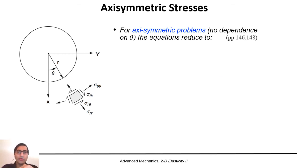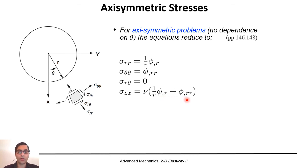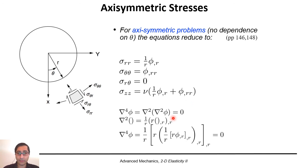As a result, for axisymmetric problems we end up with a simple set of equations: sigma_rr equals 1/r times phi_comma_r; sigma_theta_theta equals phi_comma_rr; sigma_r_theta equals 0; and sigma_zz equals nu times (phi_comma_r divided by r plus phi_comma_rr). For the compatibility equation, the delta^2 operator reduces to 1/r multiplied by partial/partial_r of r times partial/partial_r, and this is applied twice — implementing the delta^2 operator two times on phi.